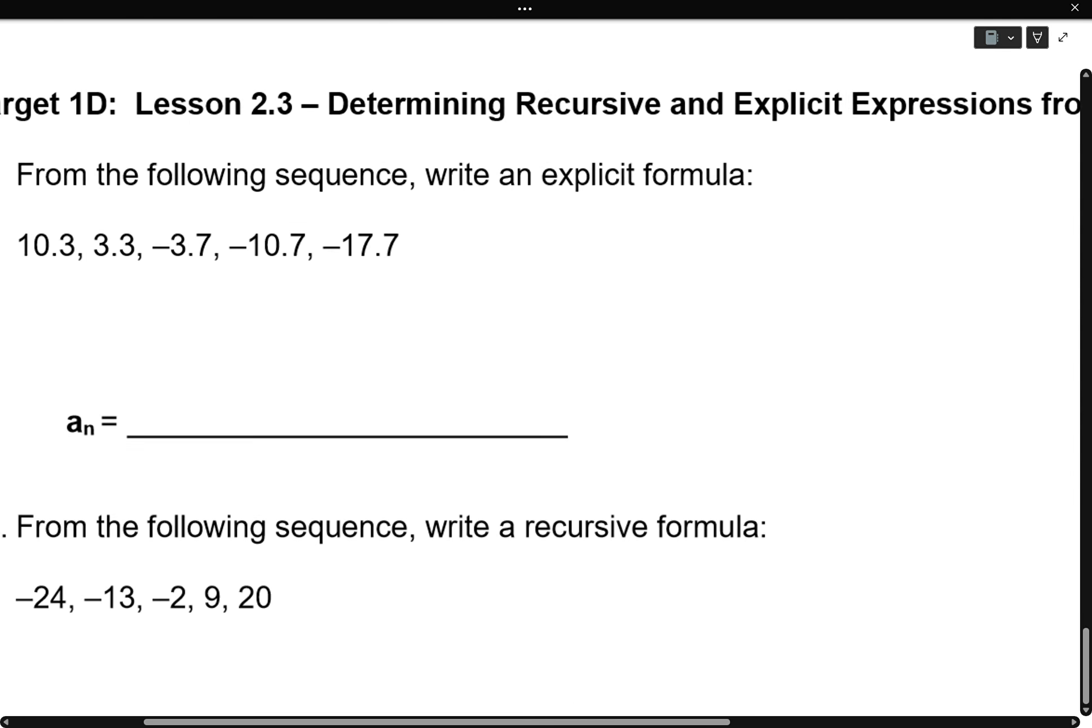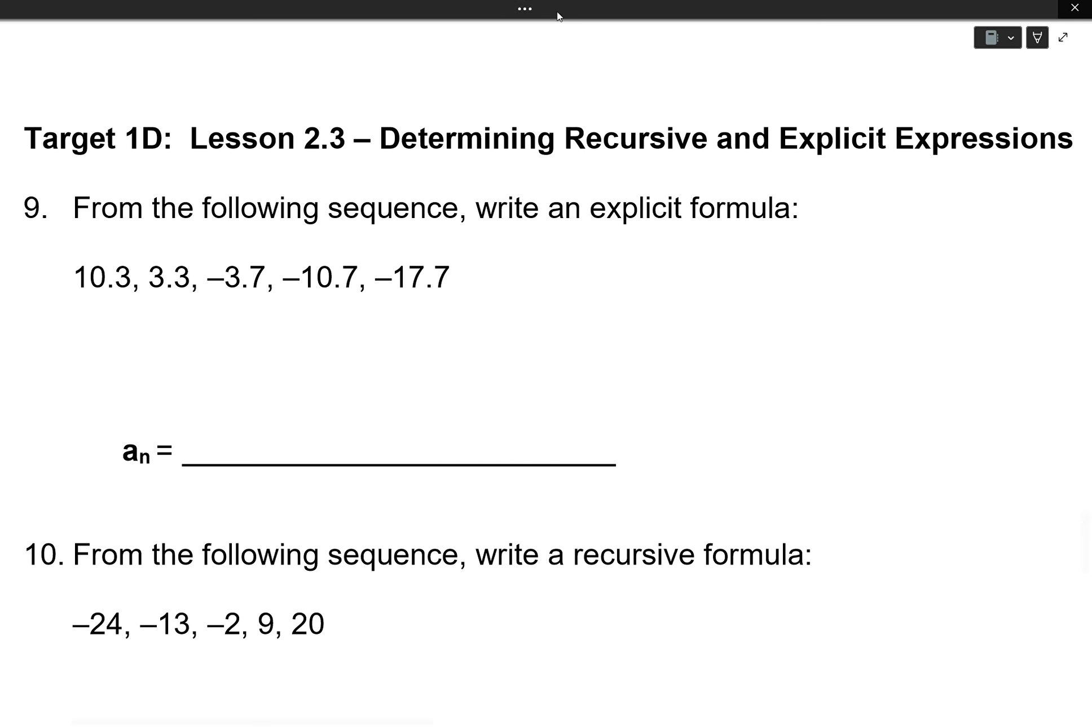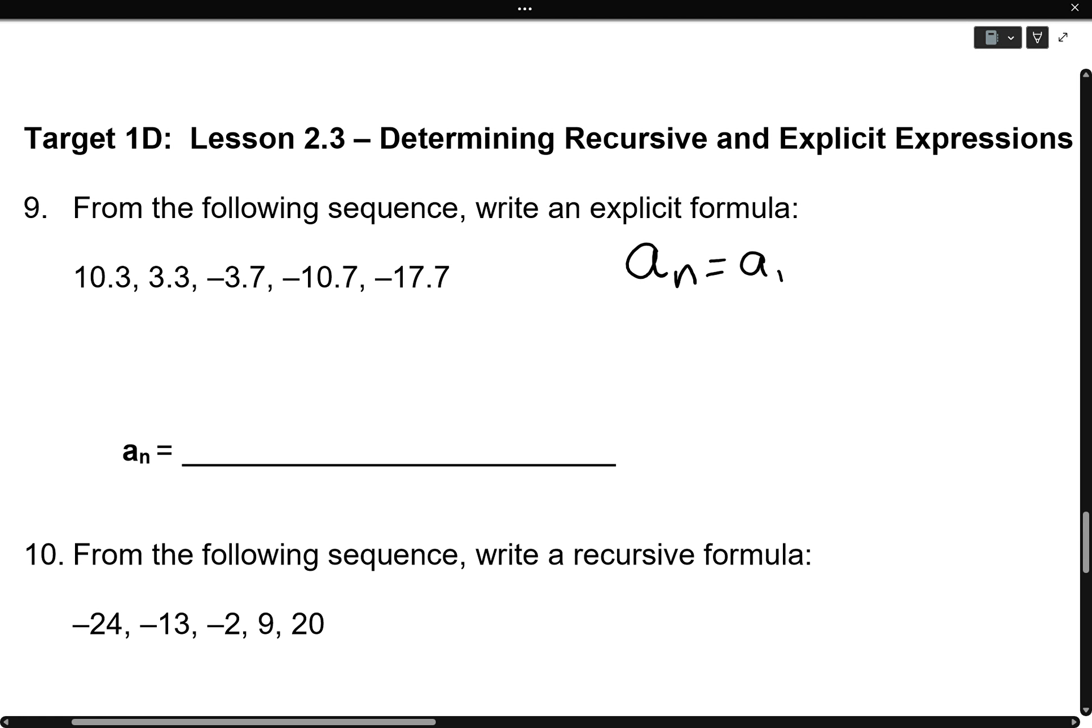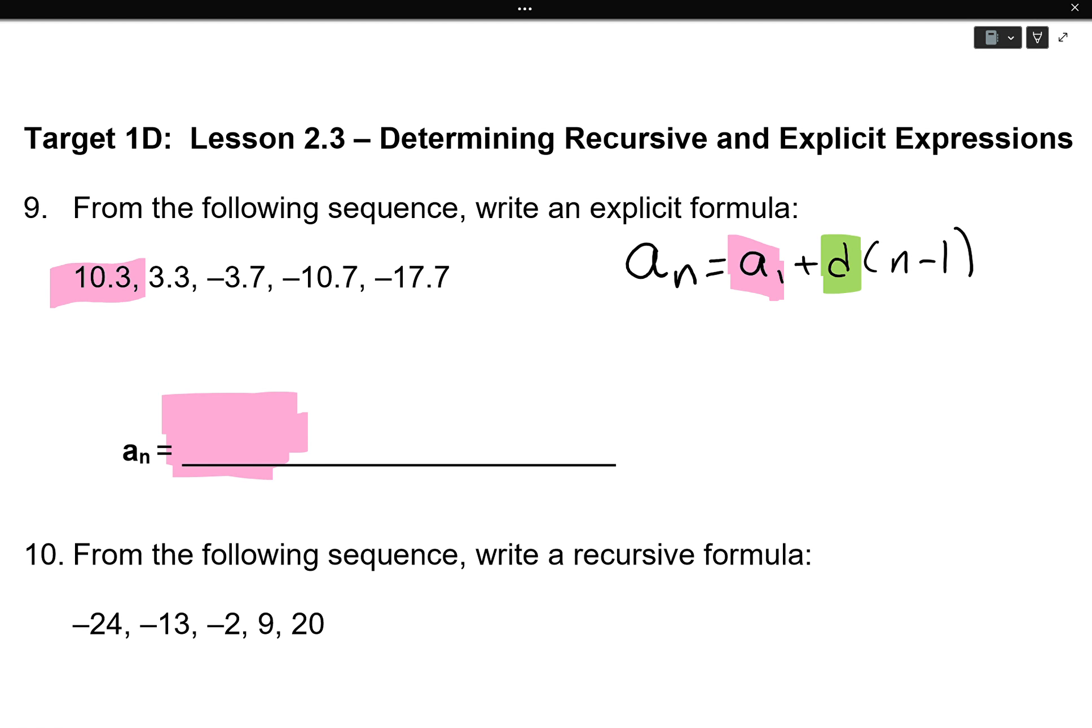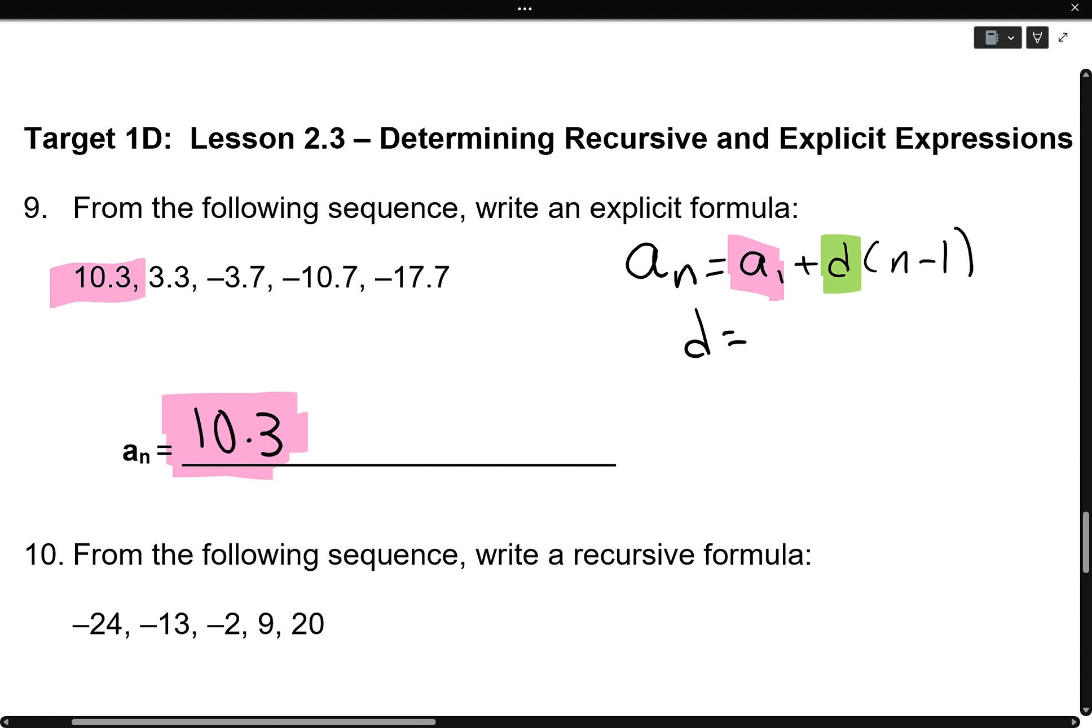Number nine. For the following sequence, let's write an explicit formula. First, let's remind ourselves that this is an explicit formula. The only things we need to find are a one, our first term, and d, our pattern. Well, a one is easy to spot. It's 10.3. I'm going to write that down immediately. Now let's find our common difference, d. In order to find our common difference, d, we do second term minus first term. And I get negative seven. So I put down minus seven and minus one. Now that is the same thing as 10.3 plus negative seven and minus one. Whichever way you feel like writing it is correct.